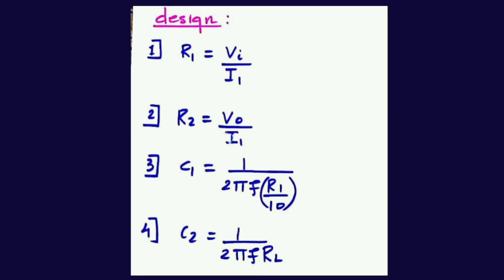Coming to the design part of the capacitor coupled inverting amplifier. To calculate R1, the formula will be R1 is equal to VI by I1, where VI is your input voltage and I1 is the same as I2, equal to 50 microamperes. To calculate R2, the formula will be R2 is equal to V0 by I1. C1 will be equal to 1 by 2 pi F into R1 by 10. To calculate C2, the formula will be C2 is equal to 1 by 2 pi F into RL.